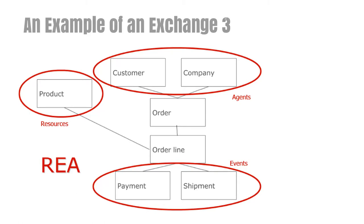So, already in this small example, we have identified resources, events, and agents — the three basic concepts that give REA its name. These basic concepts will turn out to be very powerful in modeling relationships and interactions between enterprises, and there is a very simple intuition underlying the use of these concepts.